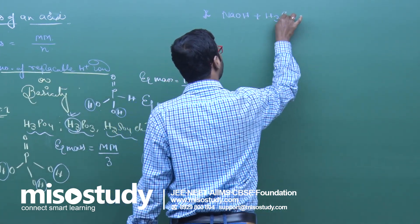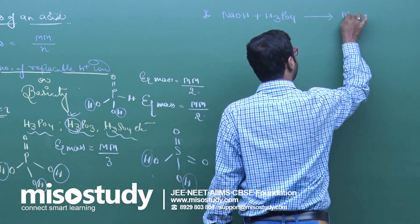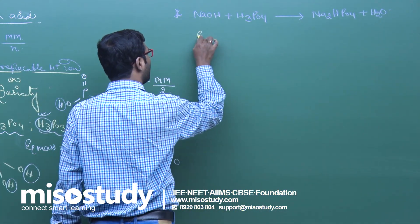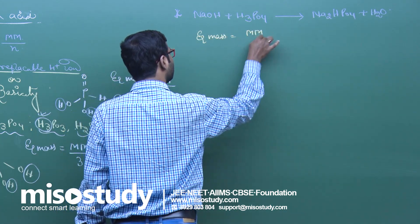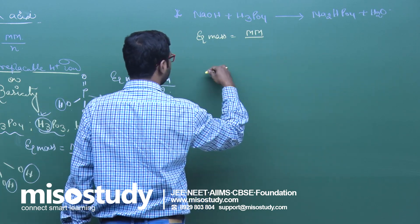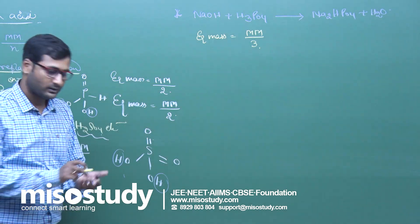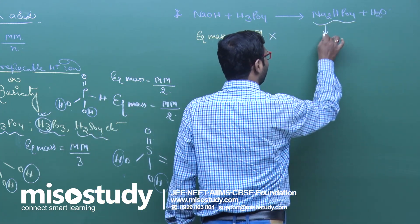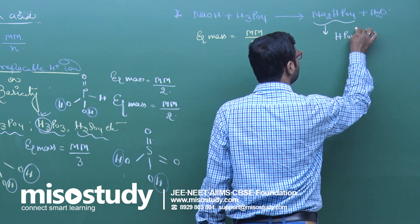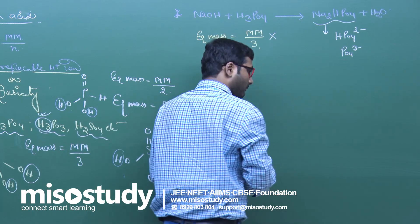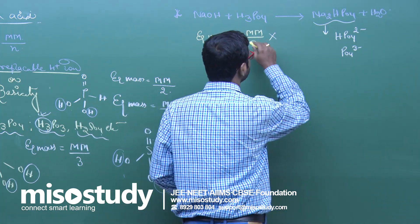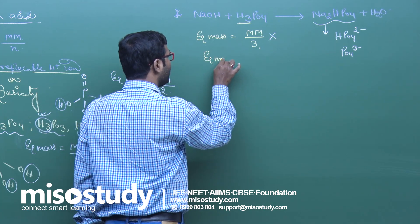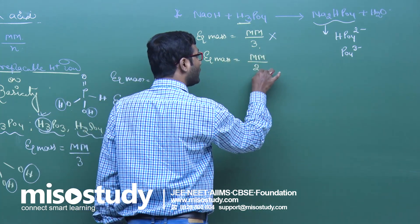Now consider the reaction NaOH + H₃PO₄ → Na₂HPO₄ + H₂O. If asked to find the equivalent mass of H₃PO₄ here, putting N = 3 would be completely wrong. Check the reaction: H₃PO₄ converts into HPO₄²⁻, not PO₄³⁻ — meaning only two H⁺ ions are released. So in this case, equivalent mass = molecular mass / 2, not 3.